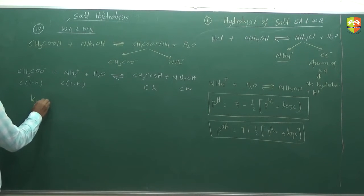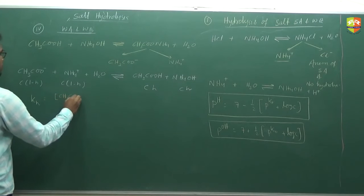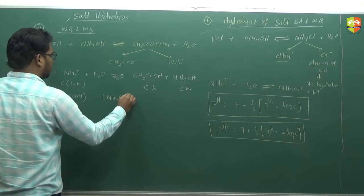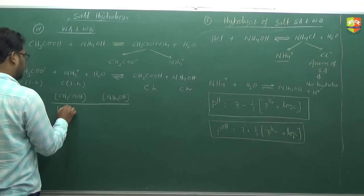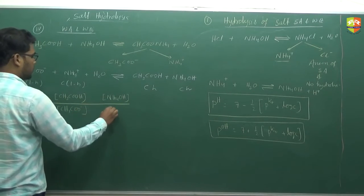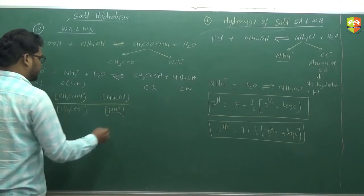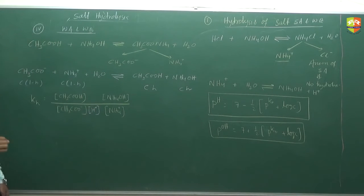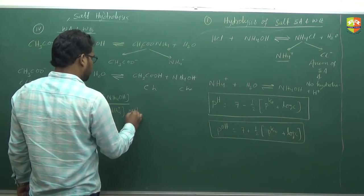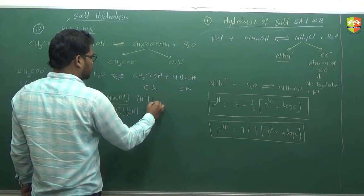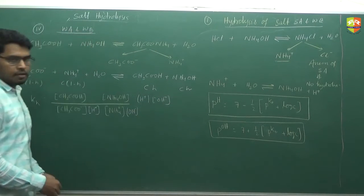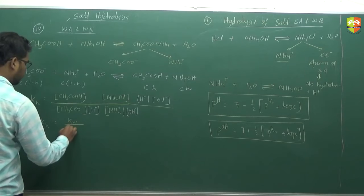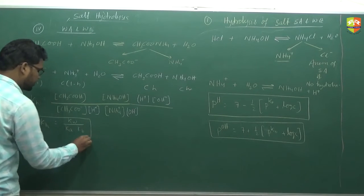What is the KH for this? KH equals concentration of CH3COOH times concentration of NH4OH, divided by concentration of CH3COO⁻ times concentration of NH4⁺. If you multiply H⁺ here, it becomes 1/Ka. If you multiply OH⁻ here, it becomes 1/Kb. So H⁺ and OH⁻ together give Kw. Therefore, KH equals Kw divided by Ka times Kb.